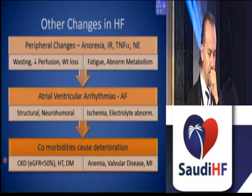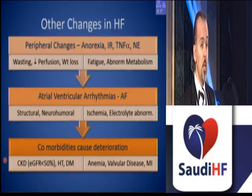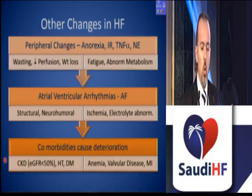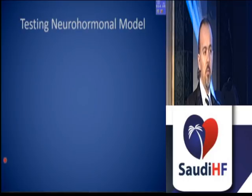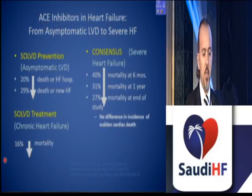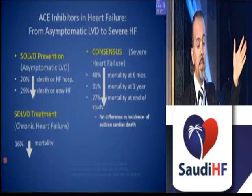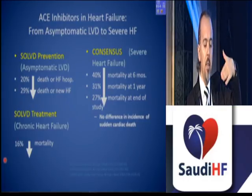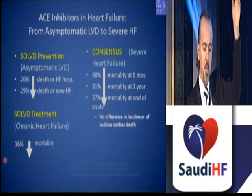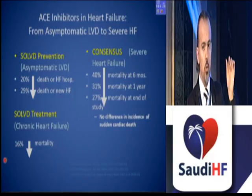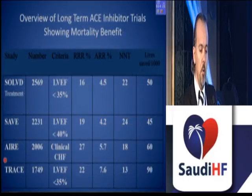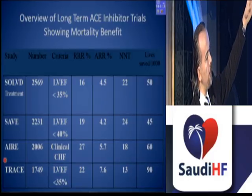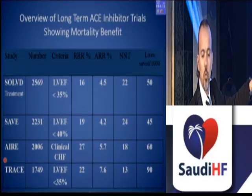There are also peripheral changes, arrhythmic changes, and comorbidities such as anemia and renal failure accompanying heart failure pathogenesis — all important contributors. ACE inhibitors are the most studied. From asymptomatic left ventricular dysfunction to severe heart failure — SAVE, PREVENTION, CONSENSUS, AIRE — all show decreased mortality and decreased hospitalization rate in patients with chronic HFrEF. An overview of long-term ACE inhibitor trials shows an absolute risk reduction of approximately 4–7%, a good improvement in these patients.